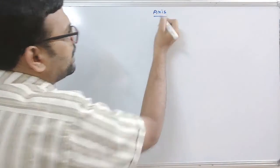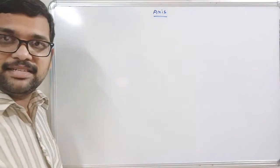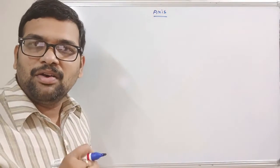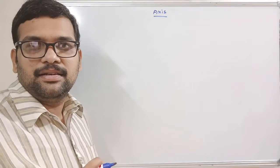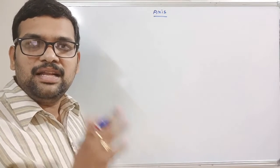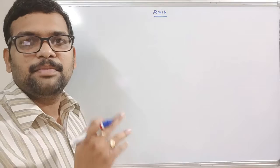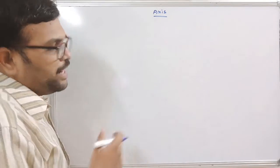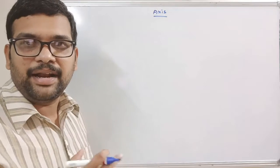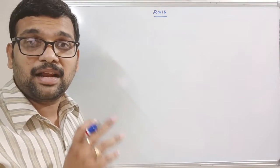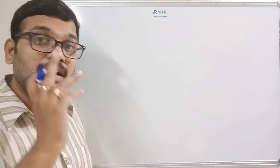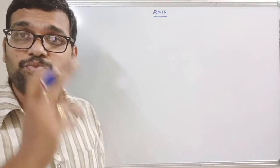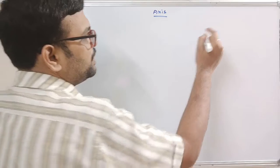Let's understand the axis attribute. Numpy means working on multi-dimensional arrays, so rather than using lists we are using arrays with the numpy package in Python. We can have multi-dimensional arrays — not just single-dimensional — and that is when axis zero and axis one come into play.